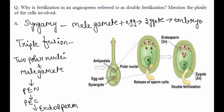The pollen tube brings two male gametes inside the embryo sac. The two processes are syngamy and triple fusion. Syngamy is the fusion of both haploid male and female gametes to form a diploid zygote. When the pollen tube enters the embryo sac, one male gamete fuses with a female gamete to form a diploid zygote, which further develops to form the embryo.